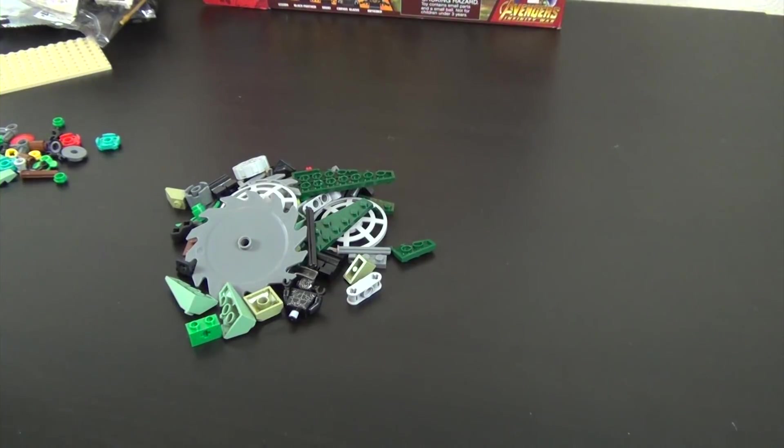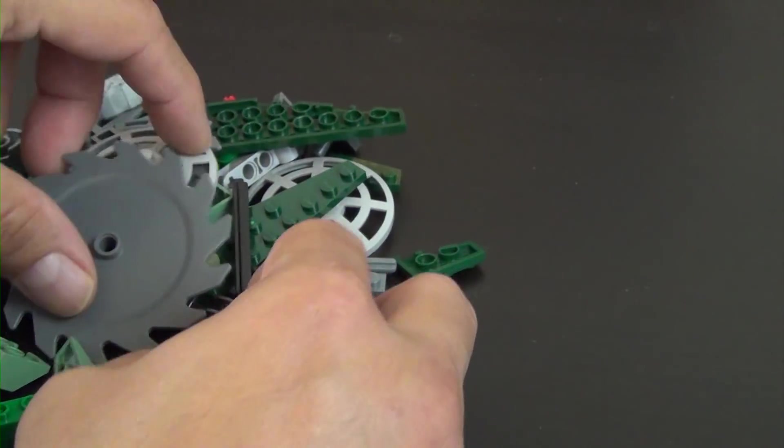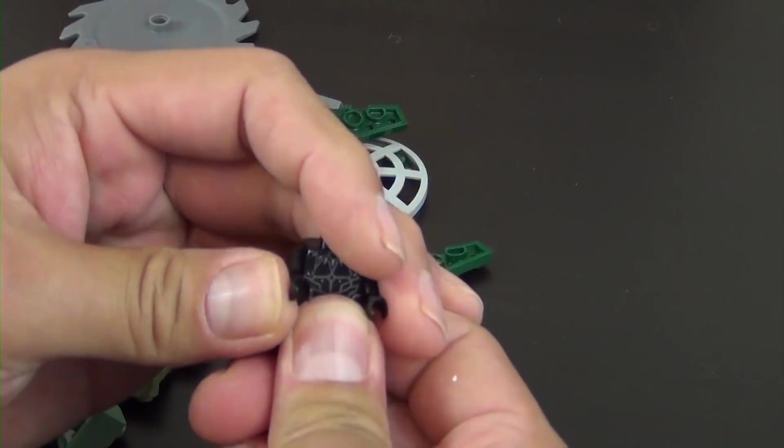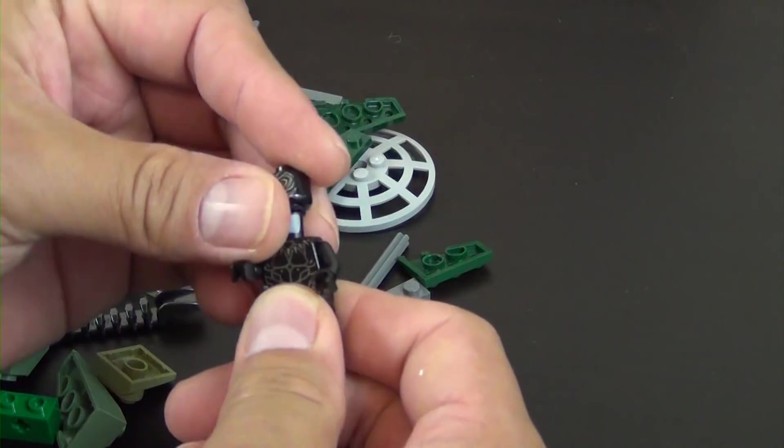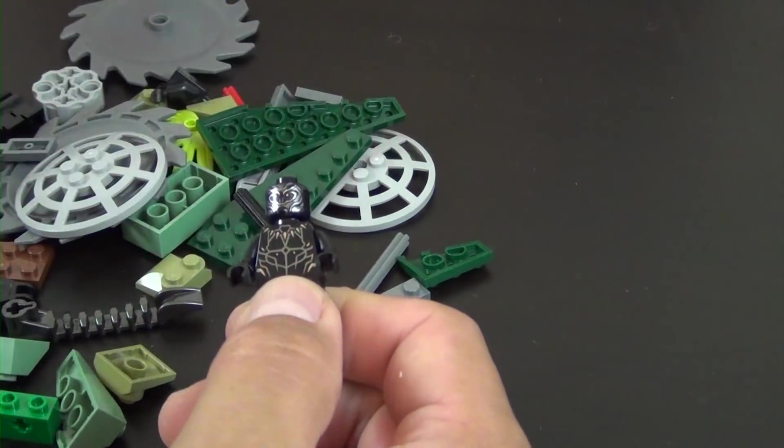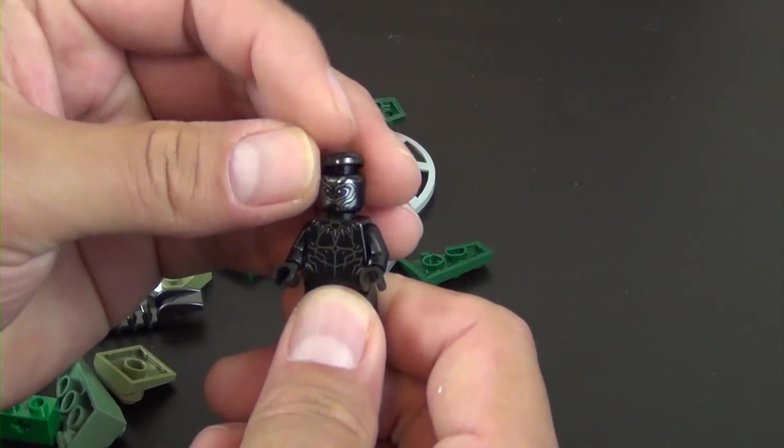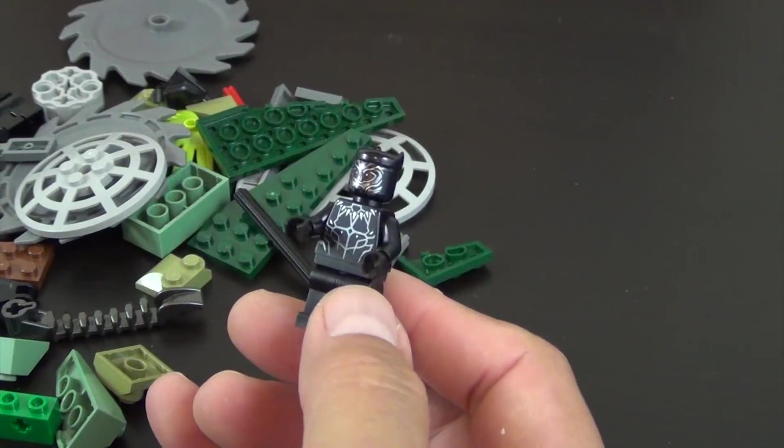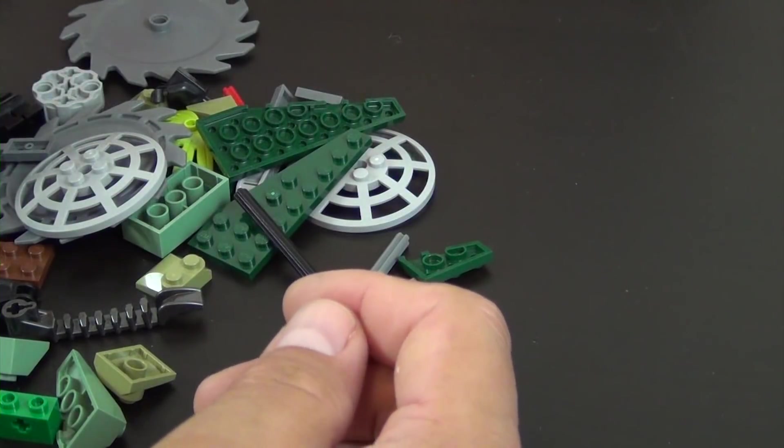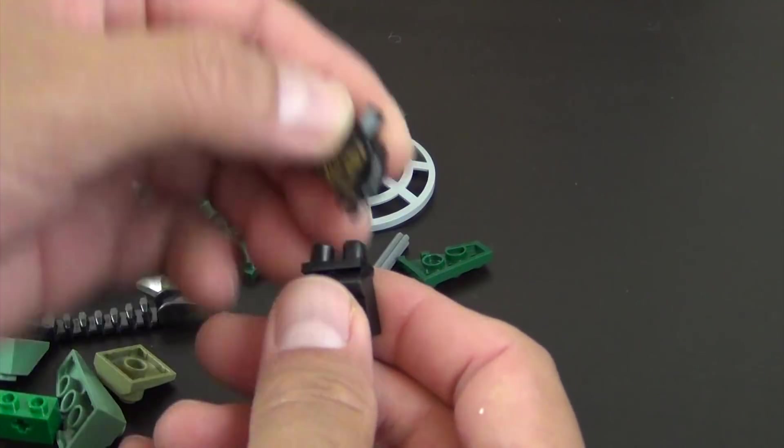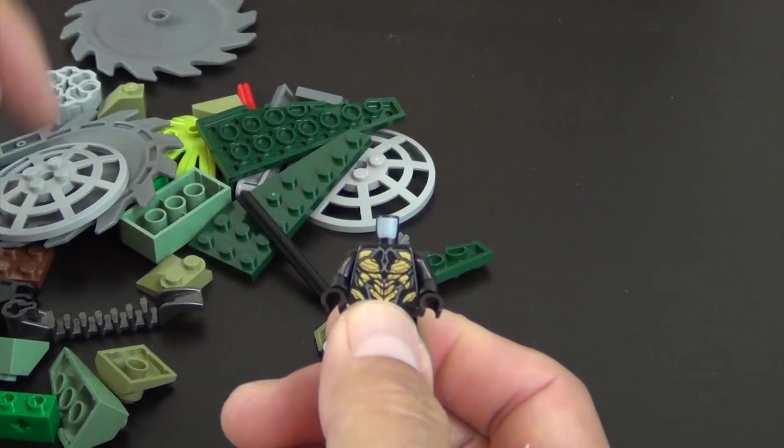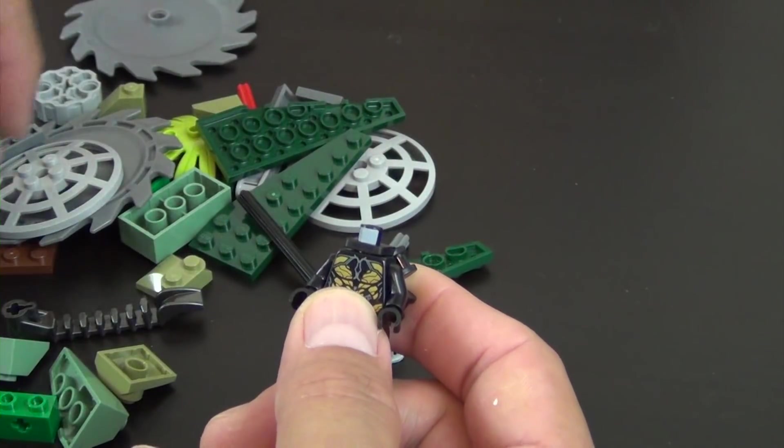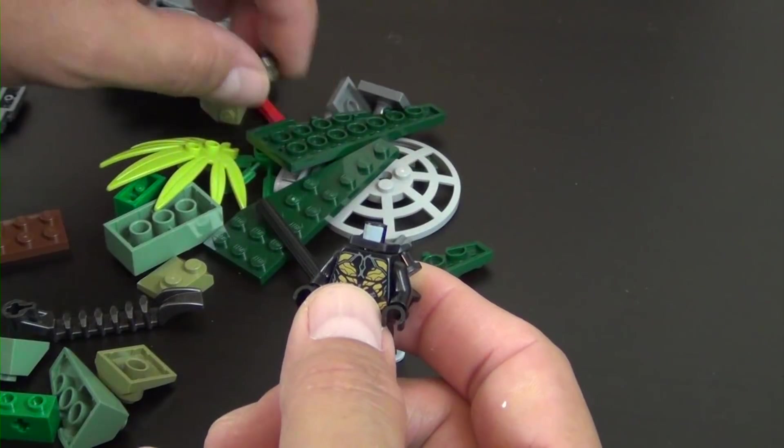Here we go, we have our first minifigure, Black Panther. That's it for the Black Panther figure. We have another Outrider. This is the third set from this Avengers sub-theme that I've built that has the Outriders in it.